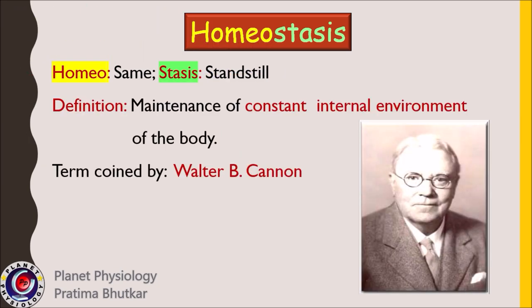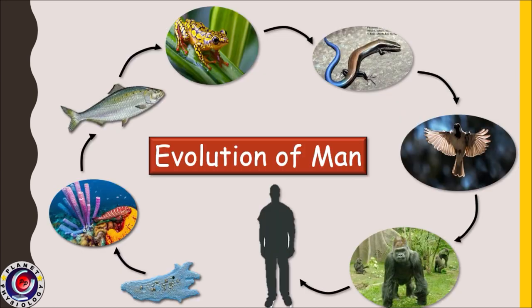The word homeostasis has two parts: 'homeo' means same, and 'stasis' means standstill. Thus, homeostasis is defined as the maintenance of a constant internal environment of the body. This term was coined by American physiologist Walter B. Cannon. So what is this internal environment?